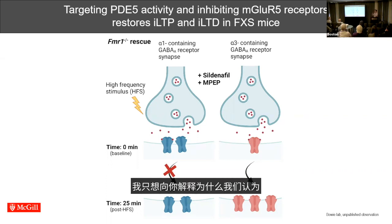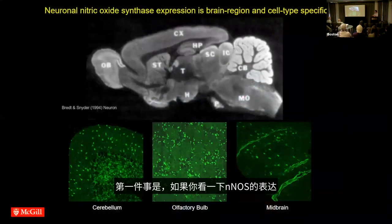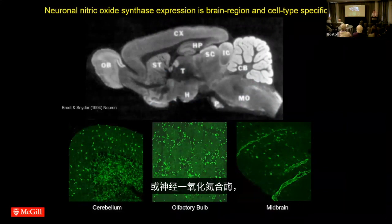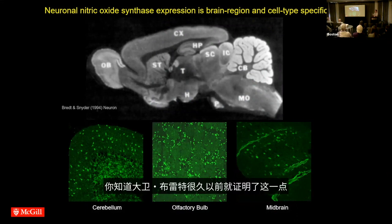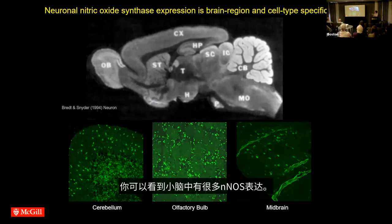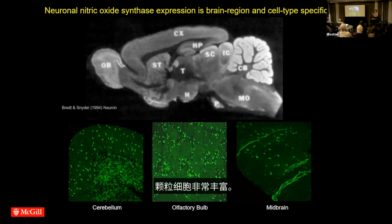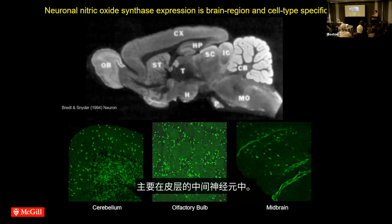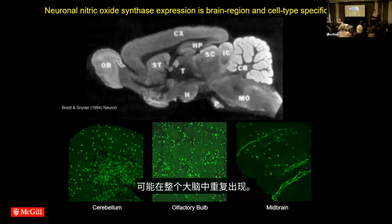In the last two minutes I want to explain why we think this is not unique to stellate cells in the cerebellum. If you look at the expression of N-NOS — neuronal nitric oxide synthase, which is biochemically coupled to NMDA receptors as David Bredt showed with Saul Snyder — there's a lot of N-NOS expressed in the cerebellum, only in stellate cells and granule cells. But it's everywhere: the olfactory bulb, certain cell types in the cortex, and the hippocampus. So you can imagine this homeostatic mechanism may be repeated across the brain — it just slipped under everybody's radar because nobody had tied these things together.